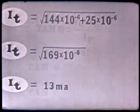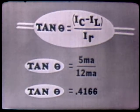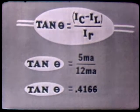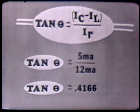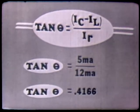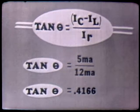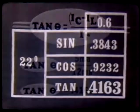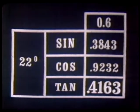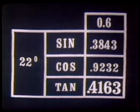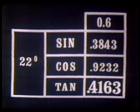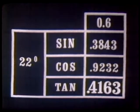What about the angle of our current? We can use the tangent trig function rather than the protractor to determine this angle. The tangent of angle theta equals IC minus IL divided by IR. Substituting, the tangent of angle theta equals 0.4166. Looking at our trig table, 0.4166 is nearest to 0.4163, which is the tangent of 22.6 degrees. So we have determined our phase angle using the tangent trig function.